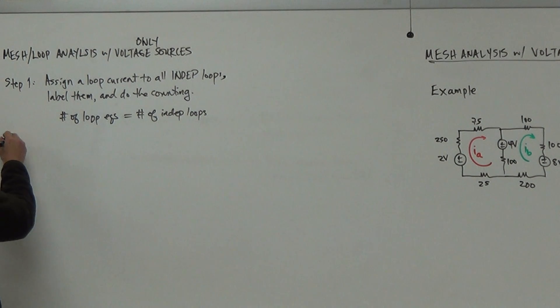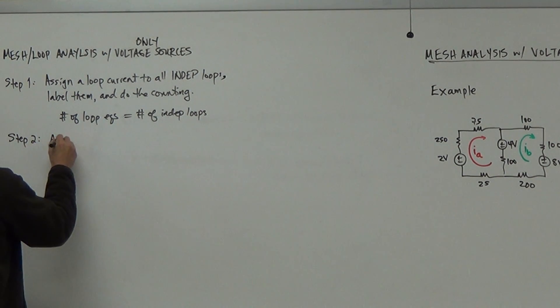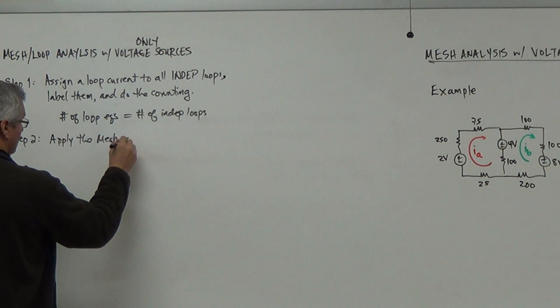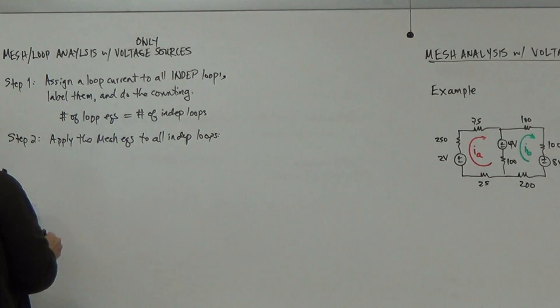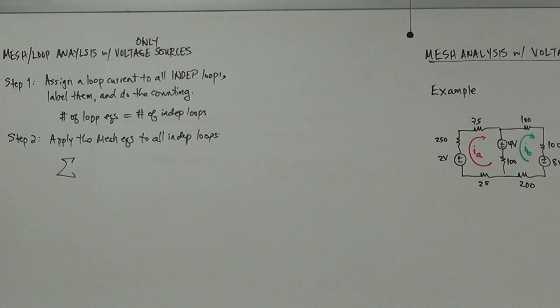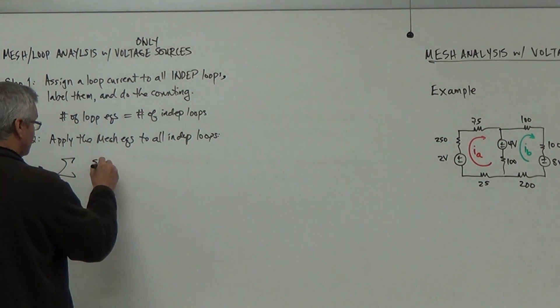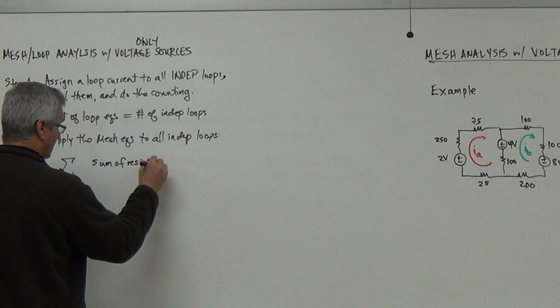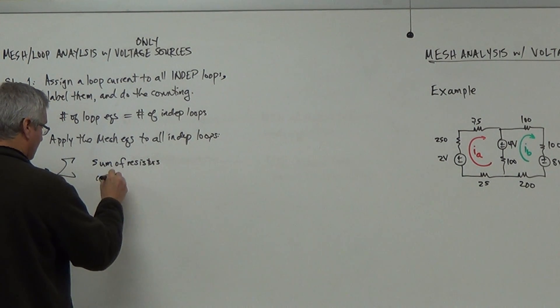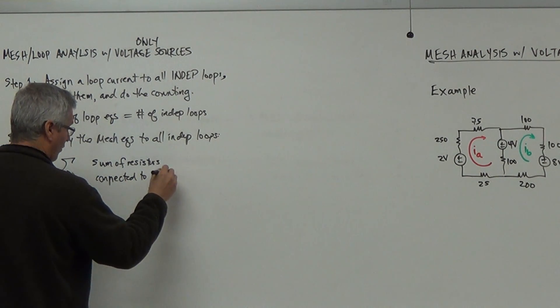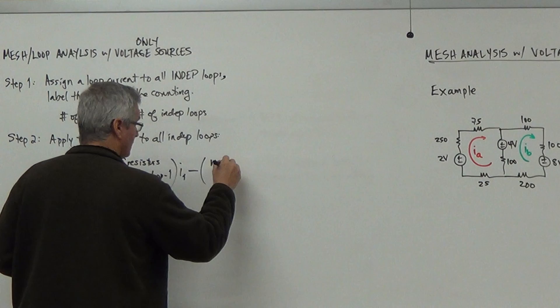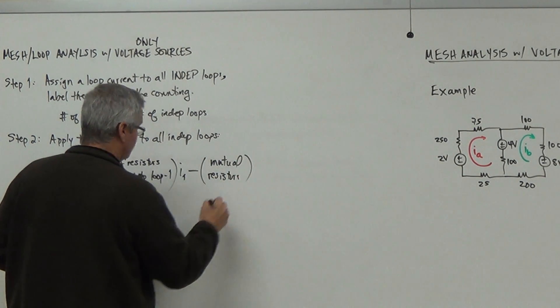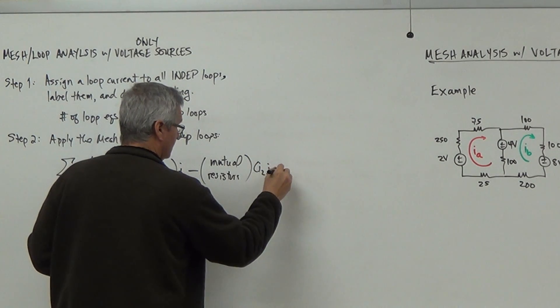And then what we'll do here is that then we apply, so now we apply the mesh equations to all independent loops. So how do I do that? So it's got to be the sum. So if I have two, then I sum two equations. If I have six loops, I have six equations that I've got to sum. So I sum these, and it's going to be the sum of resistors connected to loop 1 times I1. And then it's the sum of the mutual. Then you've got mutual resistors. I subtract it, and then you get I2, I3, as many as you want.